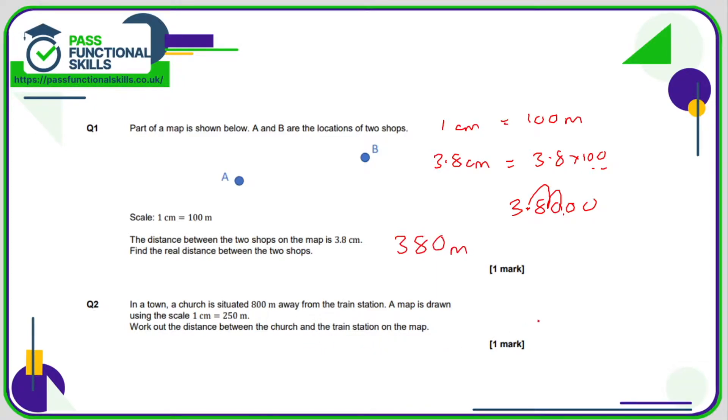Question number 2, so we can use a calculator. We know that 1 centimeter equals 250 meters. So how many centimeters equals 800 meters? We need to work out what we multiply 250 by to turn it into 800. That's quite challenging, so we need to work this backwards.